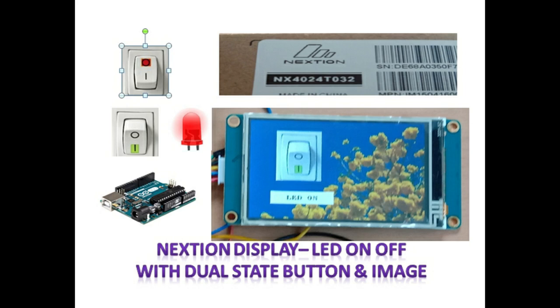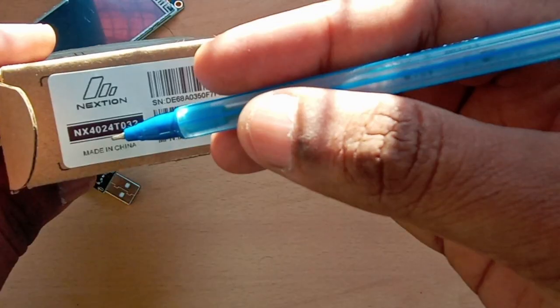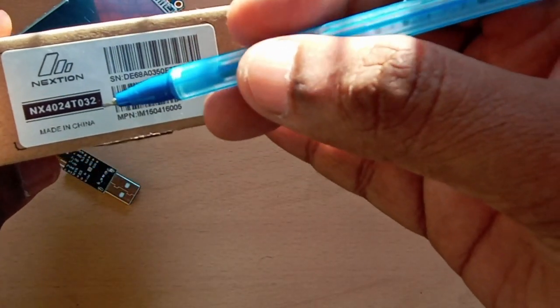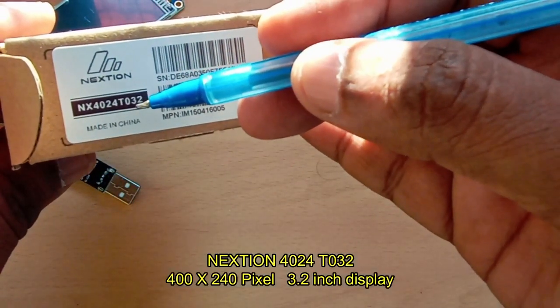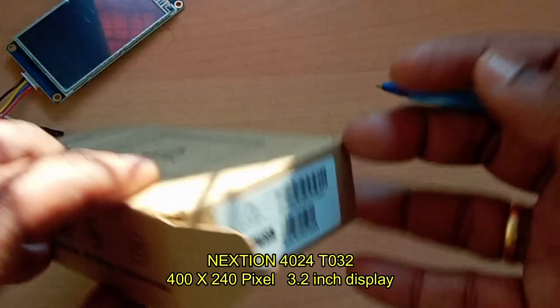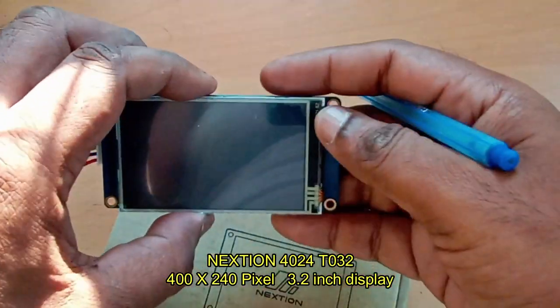Hello, this video explains how to use the dual state button tool of NextGen editor to control an LED from Arduino. In this demo I'm using the model NextGen 4024 T032.